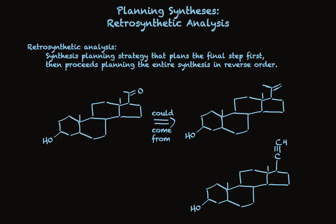As we think about what molecules the target could come from in a single step, two ways to make ketones come to mind. One is the cleavage of an alkene using ozone to make a ketone, and the second is hydration of an alkyne — electrophilic addition — to make a ketone. Both of them work pretty well, and we could easily use either of these precursors to make the molecule we want. We've done something useful: we know exactly how we could make this target molecule.